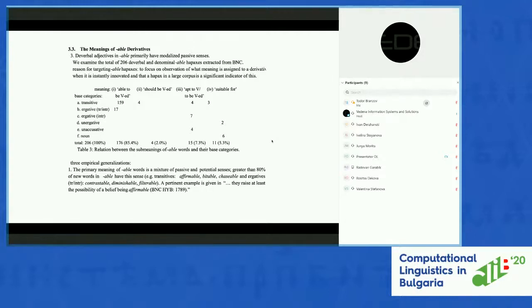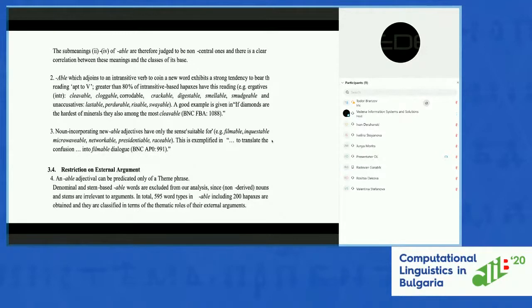Meanings two to four of -able are judged to be non-central ones, and there is a clear correlation between these meanings and the classes of the base. The first correlation is that -able which adjoins to an intransitive verb exhibits a strong tendency to bear a different reading: greater than 80 percent of intransitive-based hapaxes carry this reading. The second correlation is that noun-incorporating -able adjectives have only the sense 'suitable for,' for example. Section 3.4: restriction on external argument.